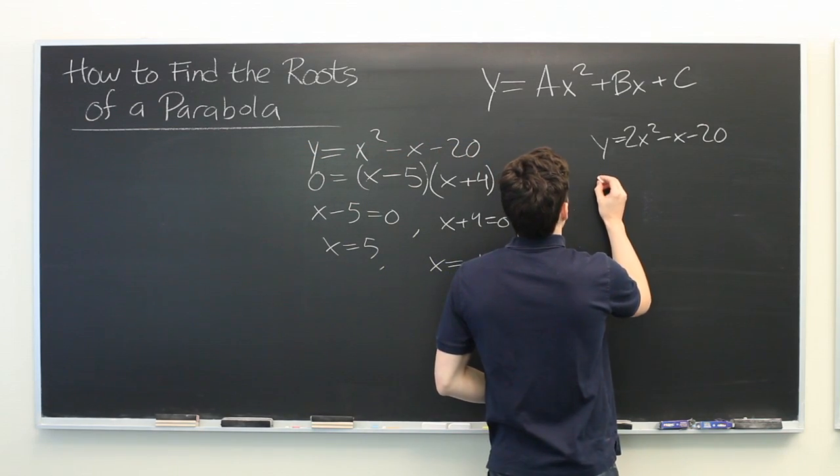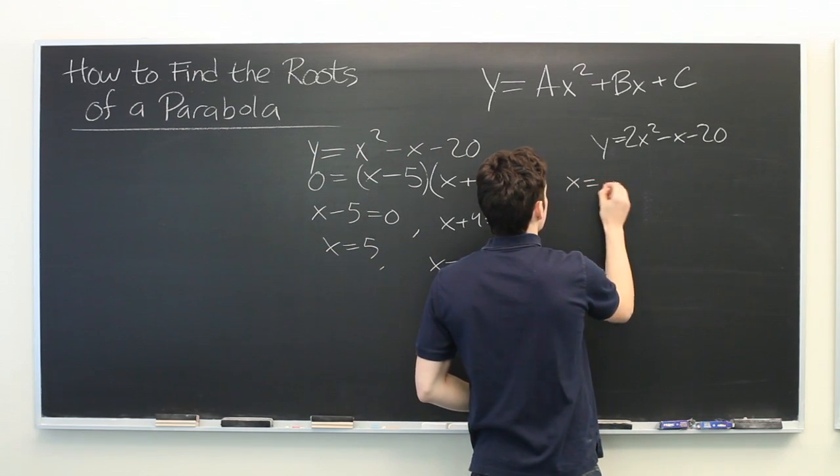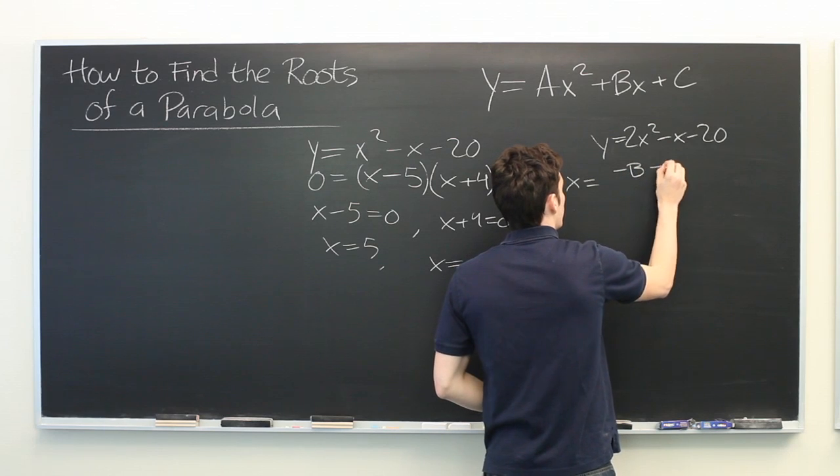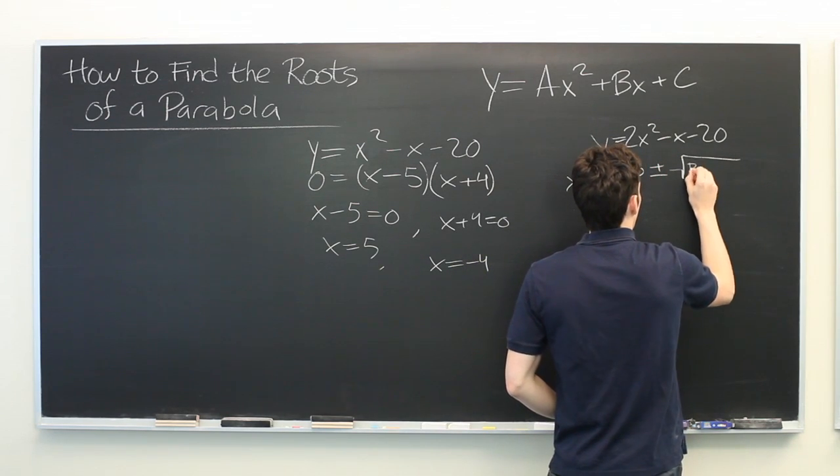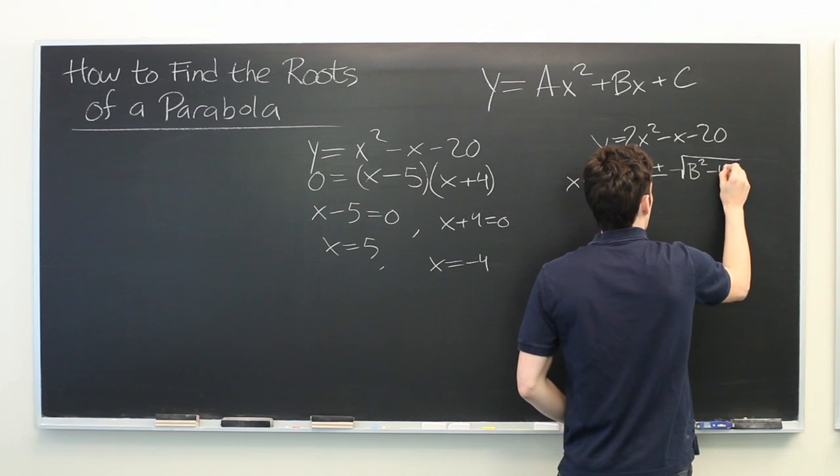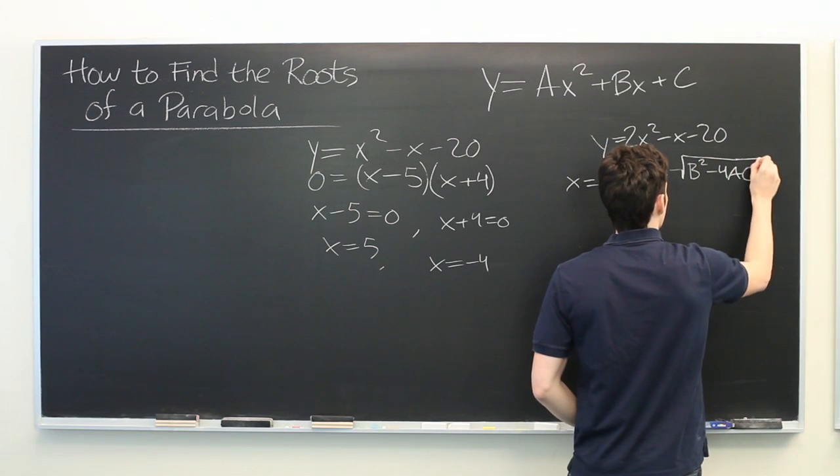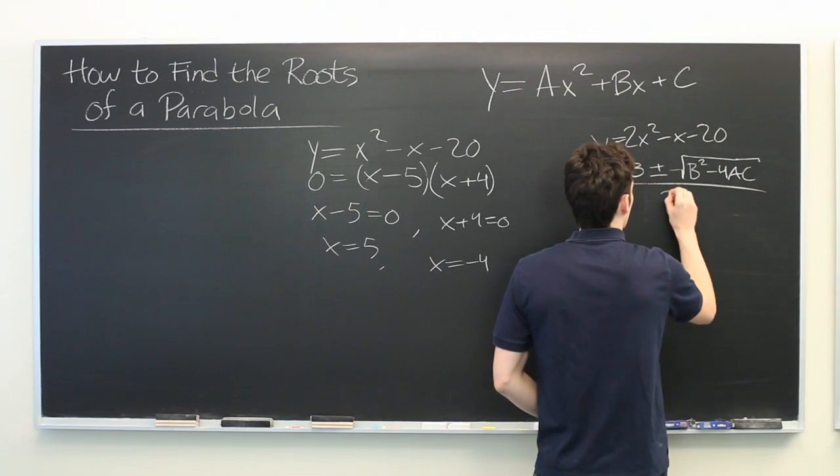The quadratic formula, which looks like this: negative b plus or minus the square root of b squared minus 4ac all over 2a.